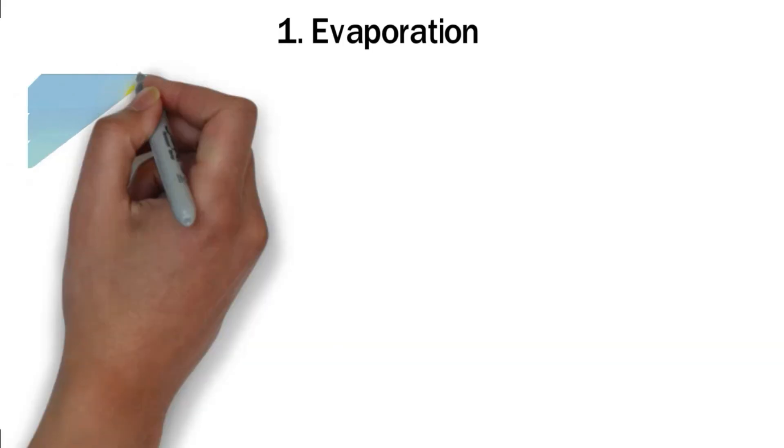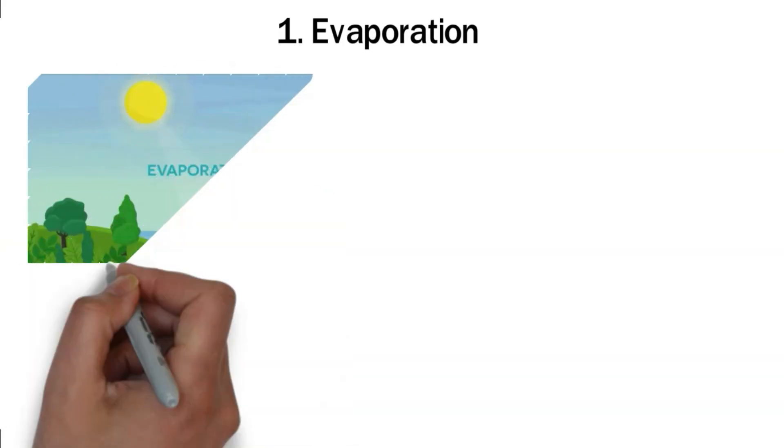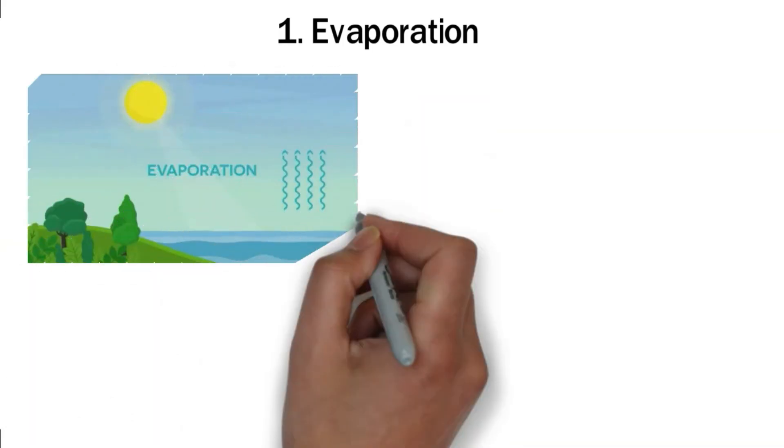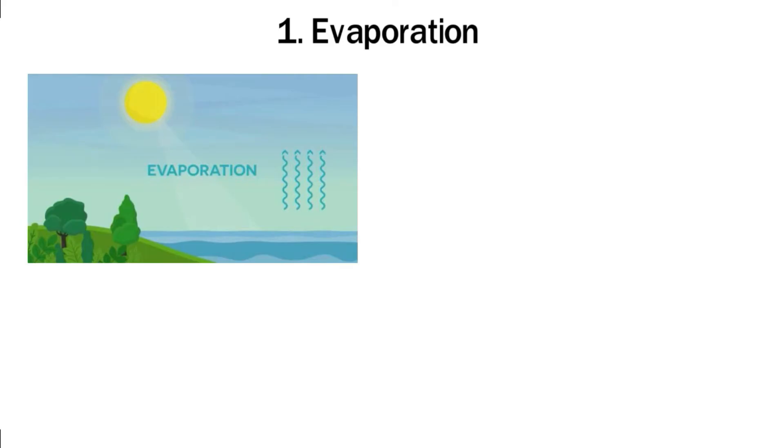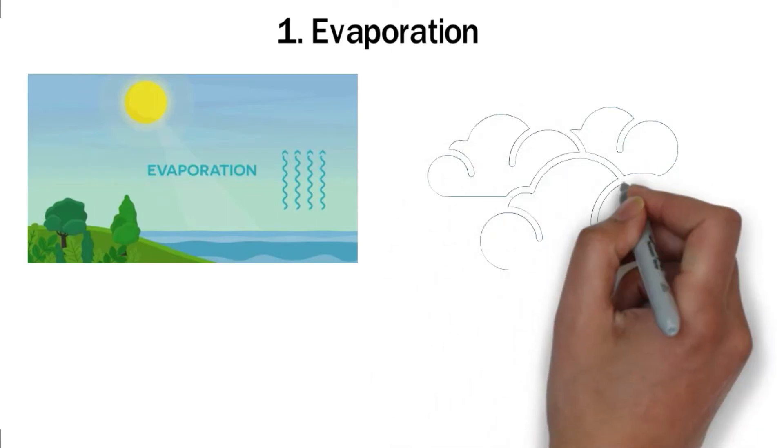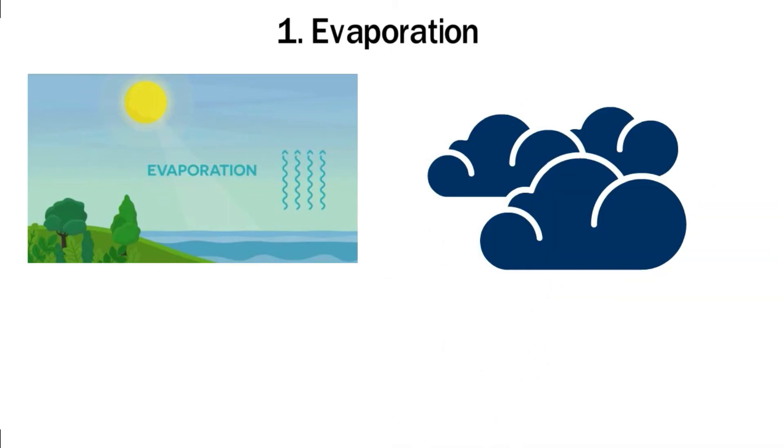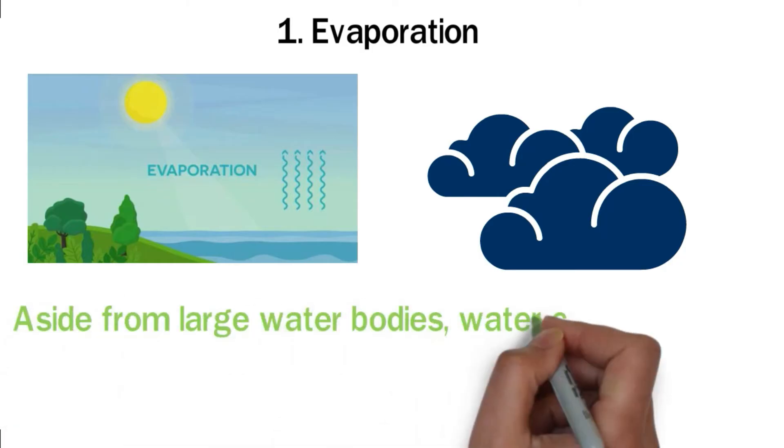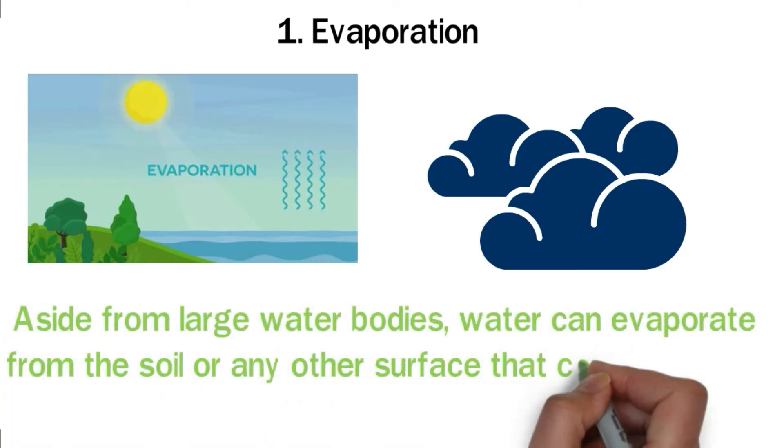This is the process through which water changes to vapor. In the water cycle, evaporation occurs when solar energy breaks the bonds that hold the water molecules. This causes the molecules to vibrate and move into the atmosphere. Most of the water in the clouds is a result of the evaporation process. Aside from large water bodies, water can evaporate from the soil or any other surface that contains water.